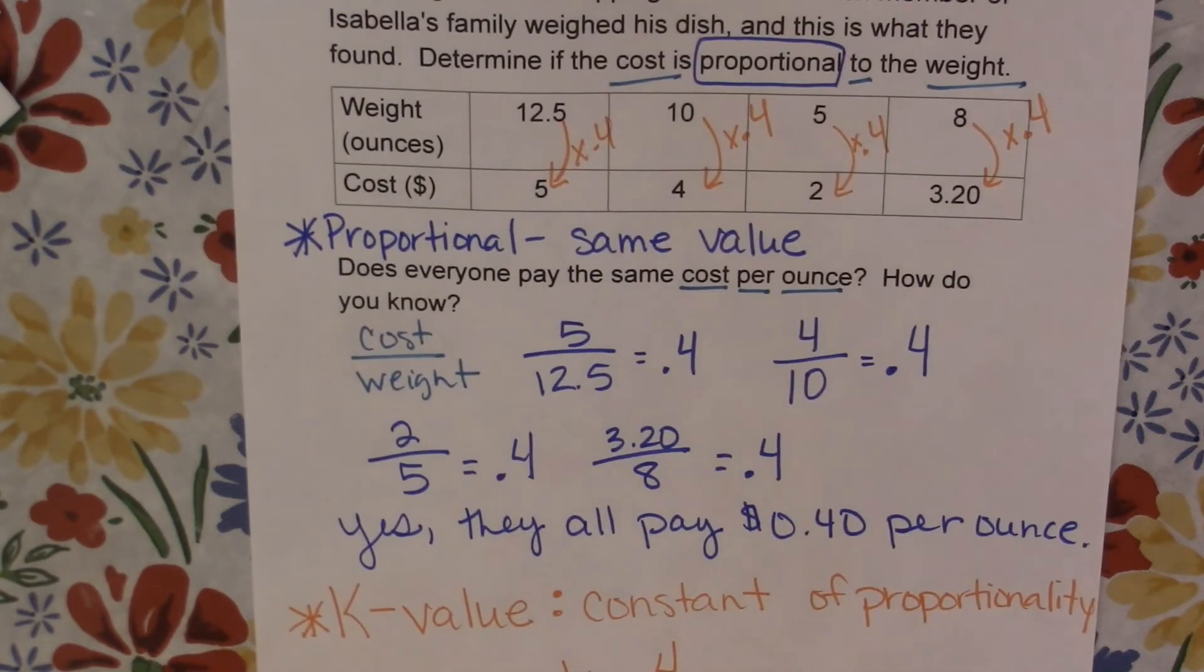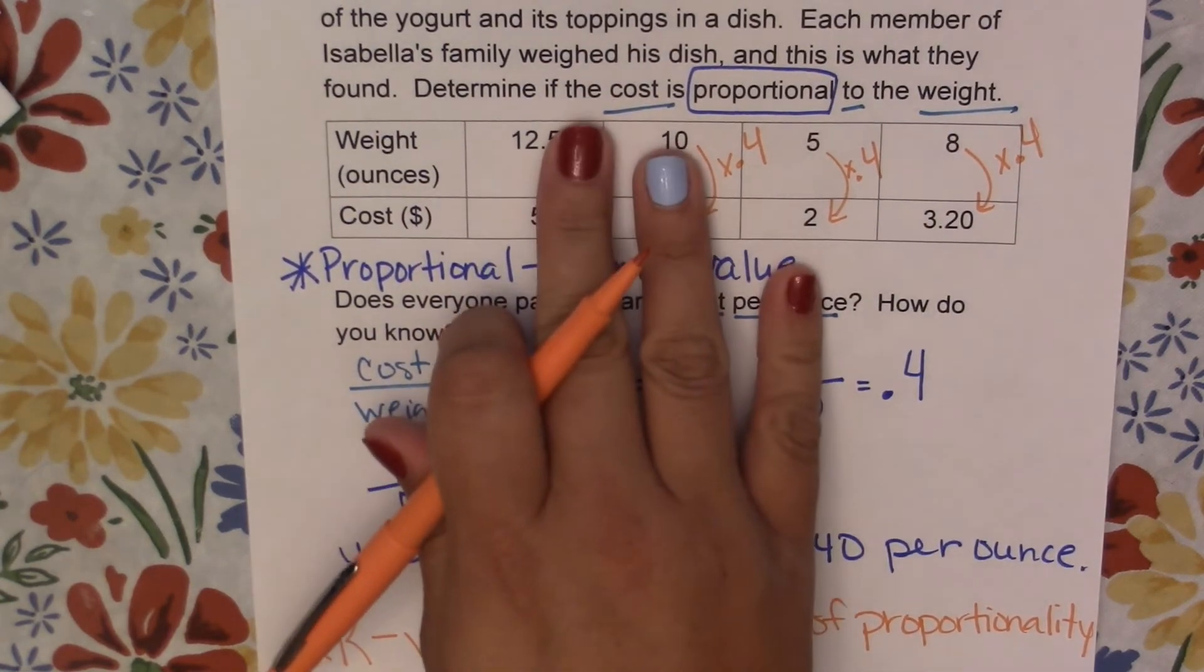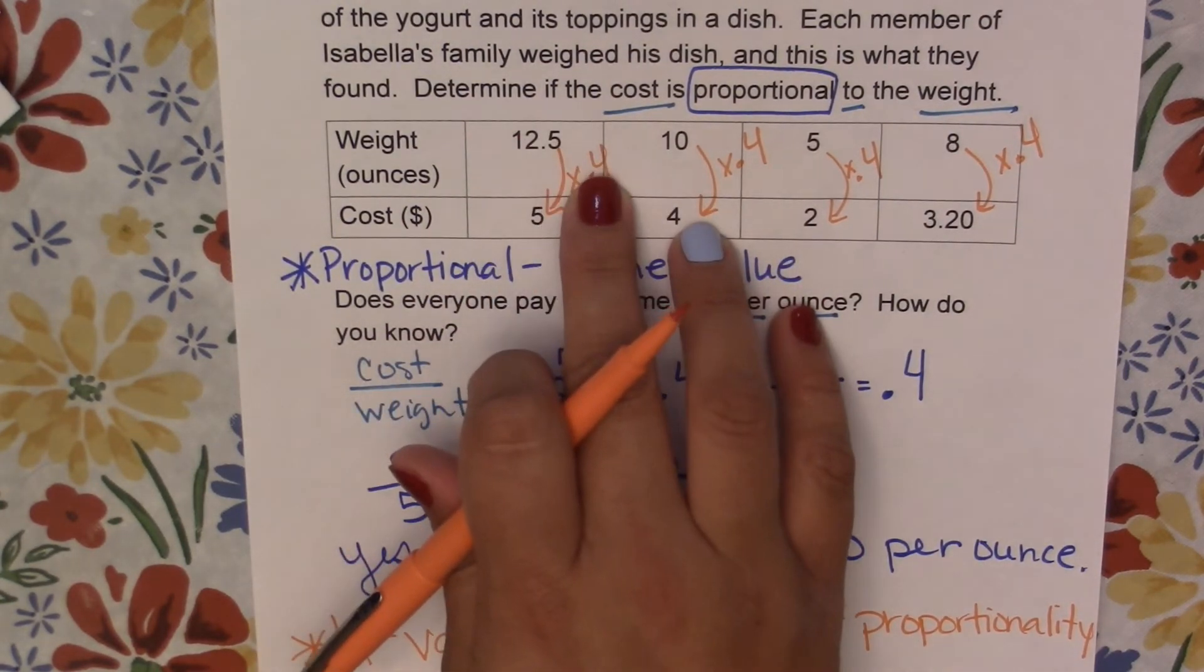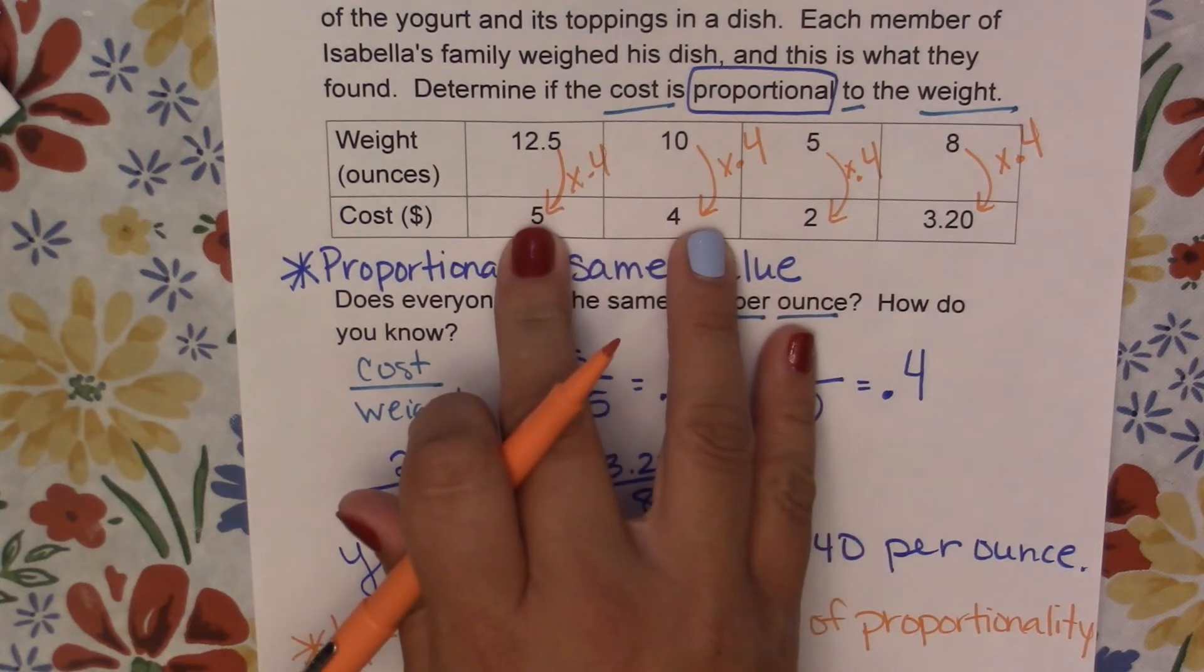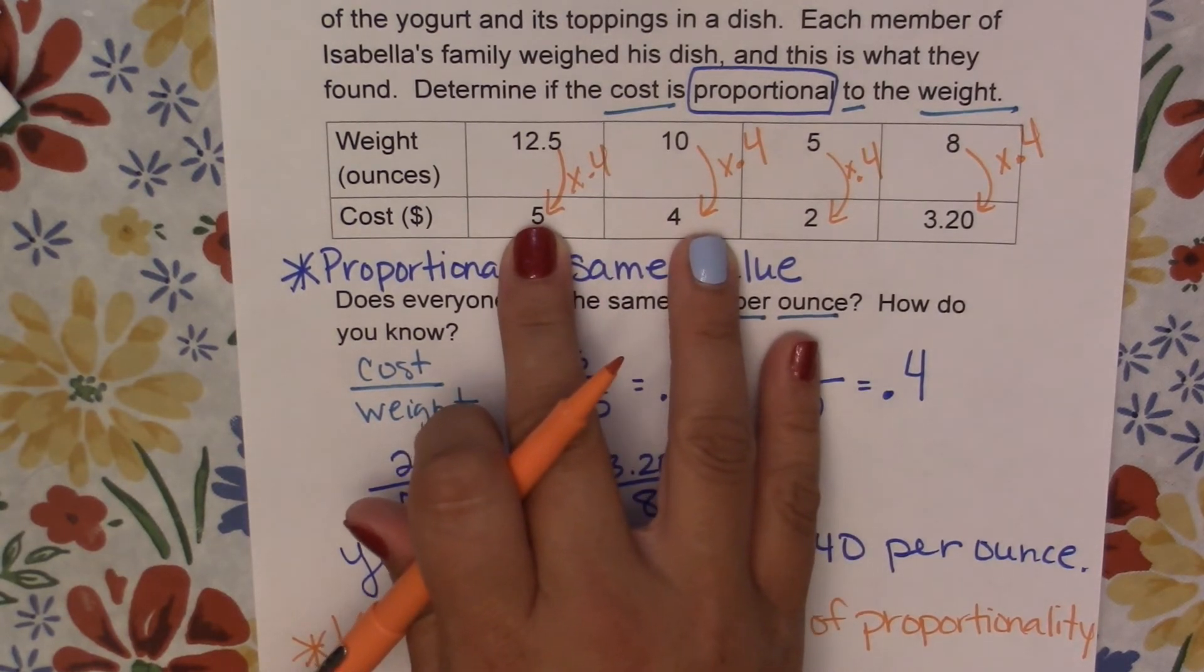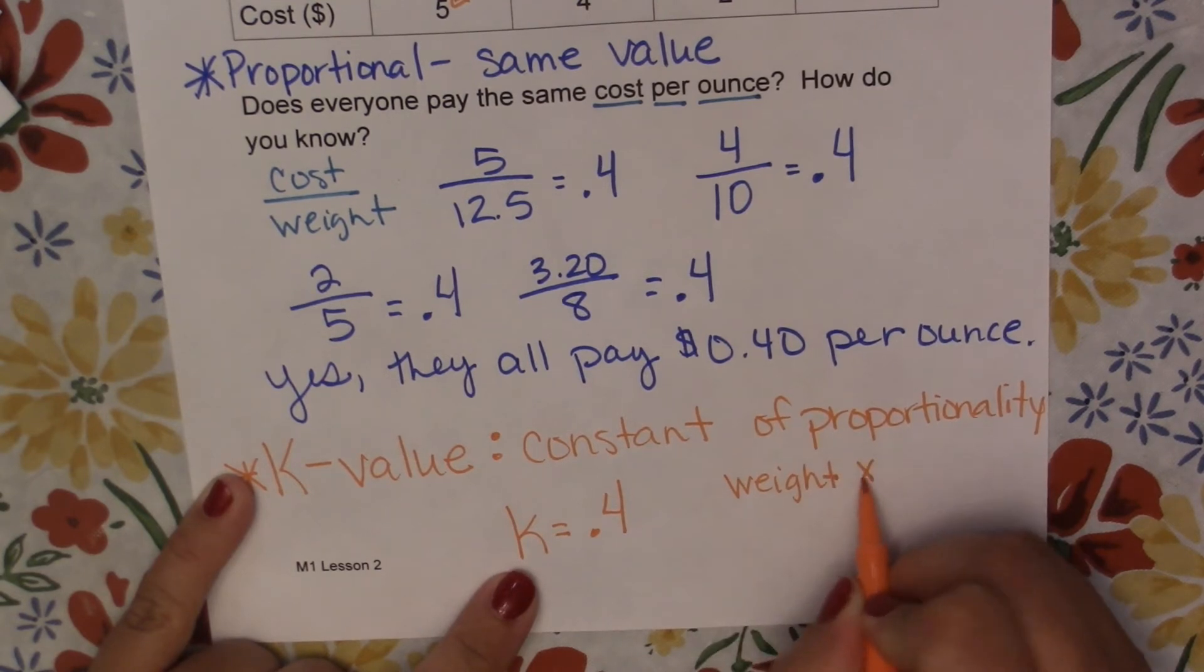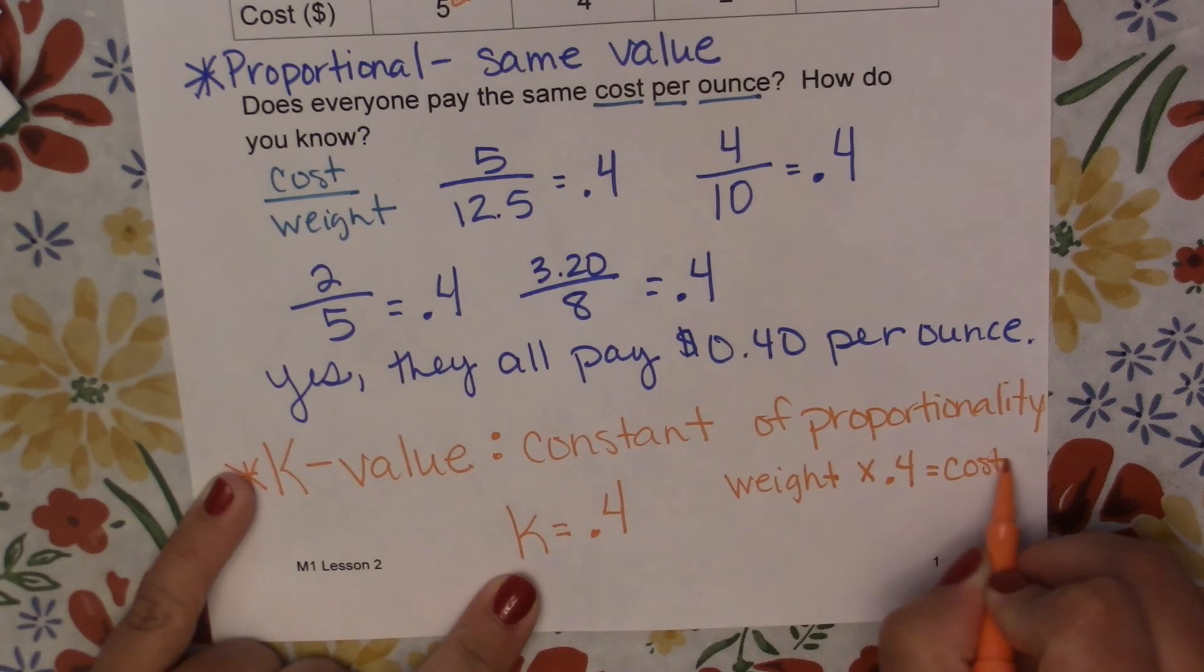So now let's think about how that fits into what we used. We were taking our weight and timesing it by 0.4 to get the cost. So if we try to start setting these up into equations, which we're going to look at a lot, we're talking about taking, in this case, the weight, and we're timesing it by 0.4, and that's giving us the cost.